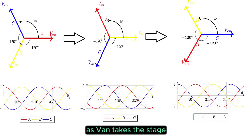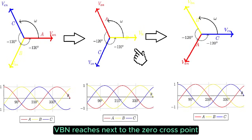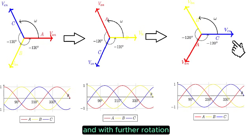As VAN takes the stage, VBN and VCN elegantly follow suit. With counterclockwise rotation, VBN reaches next to the zero-cross point, and with further rotation, VCN reaches the max voltage point.